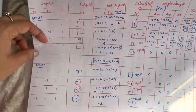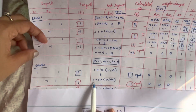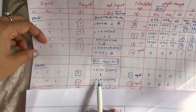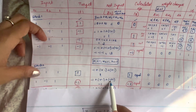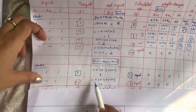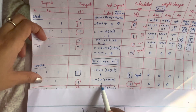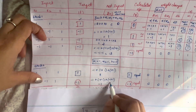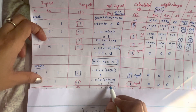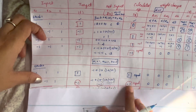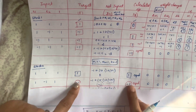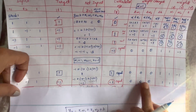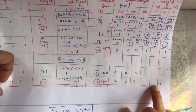Now the second set of inputs in approach 2: x1=1, x2=-1, bias=1, target=-1. y_in = -1 + 1*1 + (-1)*1 = -1 + 1 - 1 = -1. Since y_in = -1 < 0, y = -1. Comparing y=-1 and t=-1, they are equal, so no change in weights. Weight changes are 0,0,0 and the new weights remain w1=1, w2=1, b=-1.